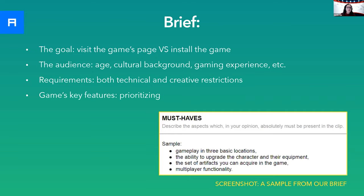Then think about your audience — their way of perception, their red lines, their ability to understand or even decrypt your message. This will depend on factors like cultural background and gaming experience, and could affect your creative decisions regarding concept and style. Your decisions could also be influenced by the rules and regulations of the platforms you plan to place your video on. For example, if you need a video for the App Store, its duration must be from 15 to 30 seconds — and that's firm.